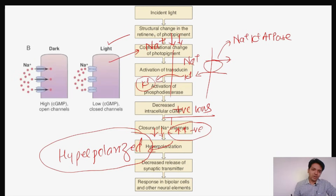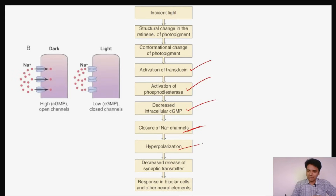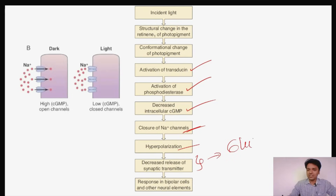To summarize the steps: activation of transducin → activation of phosphodiesterase → decreased intracellular cyclic GMP → closure of sodium channels → hyperpolarization. Once the cell is hyperpolarized, neurotransmitter release decreases. The neurotransmitter here is glutamate. The decrease in glutamate release produces a response in the bipolar cell.